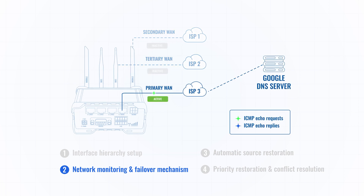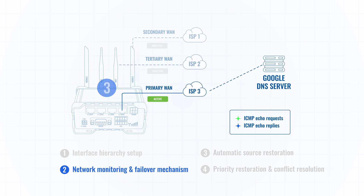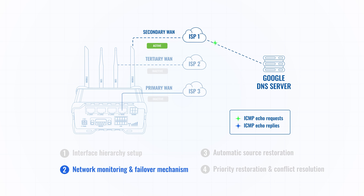Failover uses ping functionality to continuously monitor the connectivity of your network's primary internet source — in this case the wired interface — by sending ICMP requests to the Google DNS server. If three consecutive ping requests, the default setting, fail to confirm the connectivity, the interface is considered to be down.